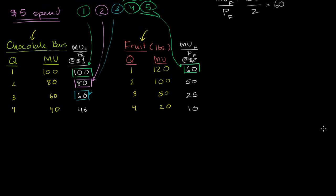In the last video, we thought about how we would allocate our $5 between chocolate bars and fruit. The way we did it was very rational — we thought about how much bang we would get for each buck, which is marginal utility per price. We got a lot of utility per price for that first chocolate bar, a little less for the next, but still more than we would get for a pound of fruit. Only then did we start buying some pounds of fruit.